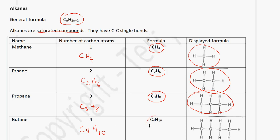The displayed formula for butane has 4 carbon atoms and 10 hydrogen atoms. So what you need to know is the general formula, which is CnH2n plus 2. You need to know that alkanes are saturated compounds, and we need to be able to draw the displayed formula of the members of this homologous series.